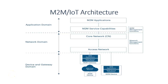Hello students, welcome to the video lecture on M2M IoT architecture. M2M, meaning machine to machine communication, refers to the automated exchange of data between devices without any human intervention. The devices collect data, which is then transmitted via wired or wireless networks, and a central system processes the data and takes necessary actions or provides insights.